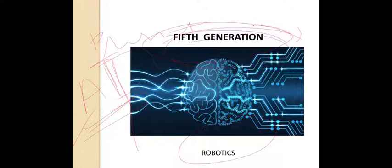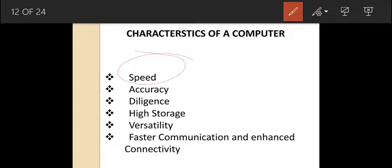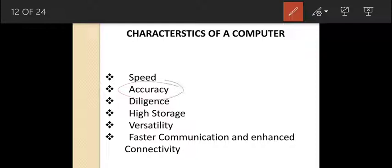Characteristics of a computer: computers have certain characteristics — speed, accuracy, diligence, high storage, versatility, faster communication, and enhanced connectivity. I will explain every characteristic in detail. Speed: a computer can perform a large number of calculations in a fraction of a second, so it has much greater speed compared to us. Accuracy means a computer always gives correct results.